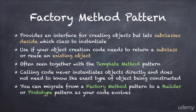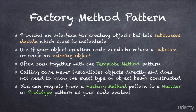The factory method pattern provides an interface for creating objects, but the subclasses decide which class to instantiate. You use this pattern if your object creation code sometimes needs to return a subclass, or maybe reuse an existing object. And it's perfectly fine to migrate from the factory method pattern to a builder or prototype pattern as your code evolves.